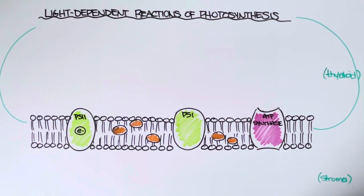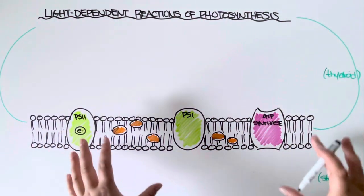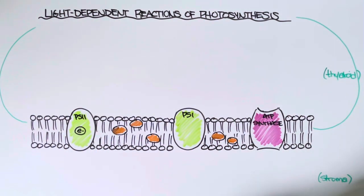So if you recall from the previous video on photosynthesis, you'll remember that the process is divided into two separate steps, the first of which being the light dependent reactions. You'll also recall that all of this is taking place inside specialized organelles within plant cells called chloroplasts.